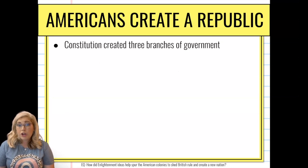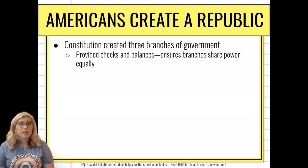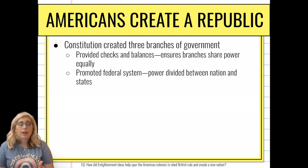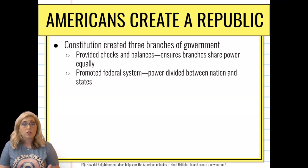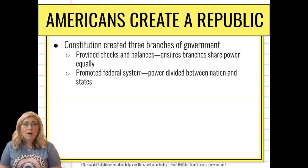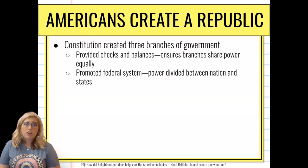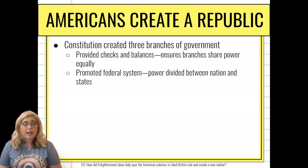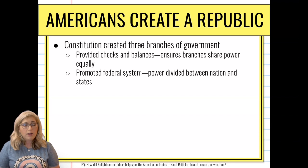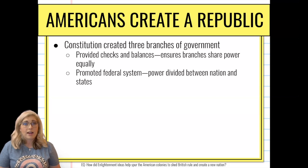The constitution created three branches of government and provides for checks and balances, where each branch shares power equally. We have a federal government with a divide between the national government and the state government. States don't have to follow everything — they can have some choices and states' rights, they just can't go against federal or national law. Each individual state can also run itself as sort of like a mini-government, as long as it doesn't go against the national government.